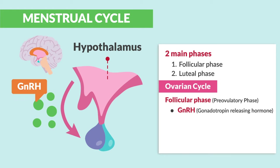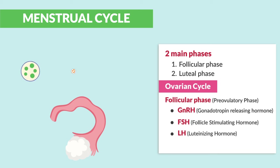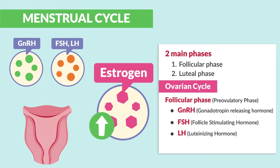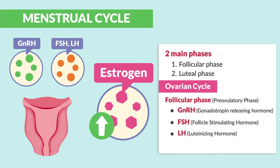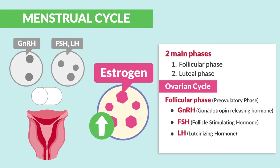The hypothalamus releases GnRH, the gonadotropin-releasing hormone, which dominoes into the release of FSH, follicle-stimulating hormone, and LH, the luteinizing hormone, from the anterior pituitary. All of these hormones stimulate the follicles within the ovaries, causing ovulation with the help of increasing amounts of estrogen — a steroid hormone that aids in fertilization — mainly to make the endometrium really thick and turn off excessive FSH and LH hormones, acting as a negative feedback loop, kind of like turning off a light switch.